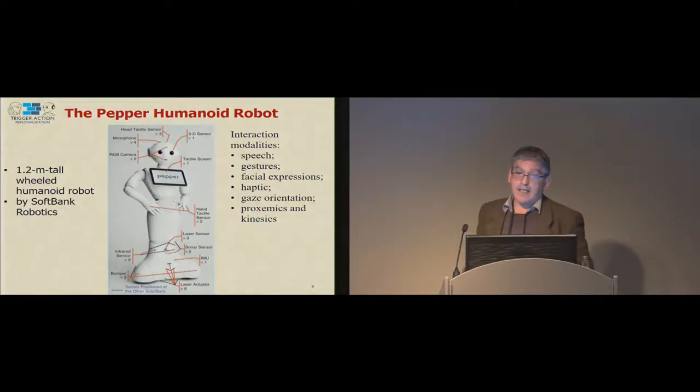It has what we call a context delegate associated with the robot, which is a kind of intermediate level between the low-level events and the events that can be specified by a person without programming experience. When the relevant triggers occur, then it can activate the desired behavior, the desired actions. This is the robot that we have used for our research. It's by SoftBank Robots. It's 1.2 meters tall. It is really rich of sensors, tactile sensors, laser sensors. It has four microphones, two RGB cameras.